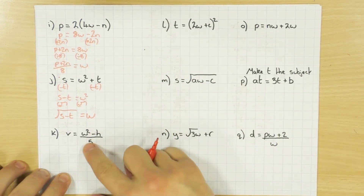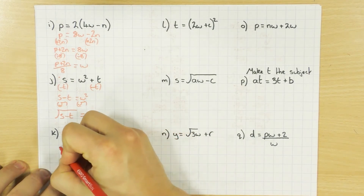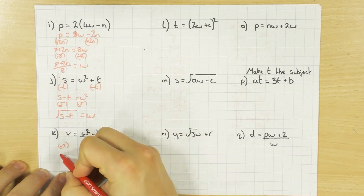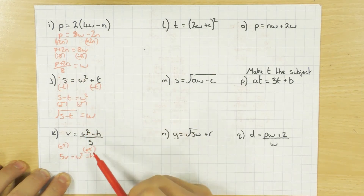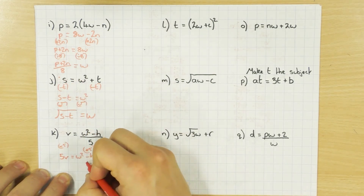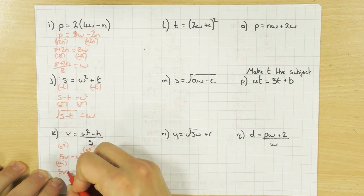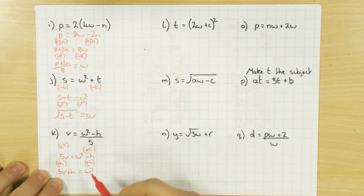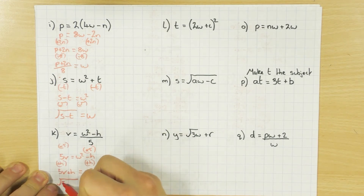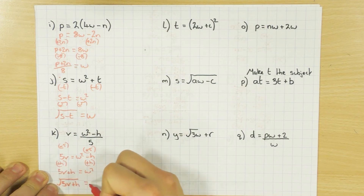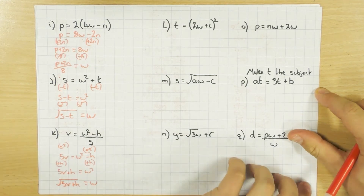Next one: I've got this divide by 5, just like a previous example. So I get rid of that by multiplying by 5 both sides, giving 5V equals W squared minus H. Then I get rid of that minus H by adding H to both sides: 5V plus H equals W squared. Again, I square root both sides because it's W squared. So I'm left with the square root of (5V plus H) equals W.